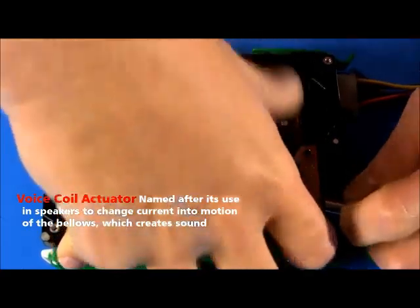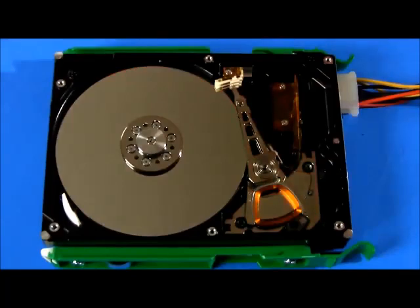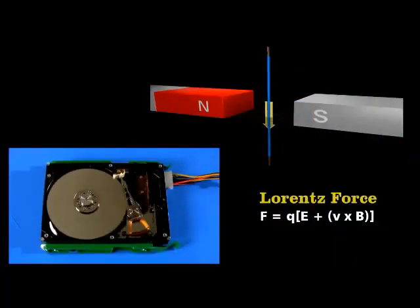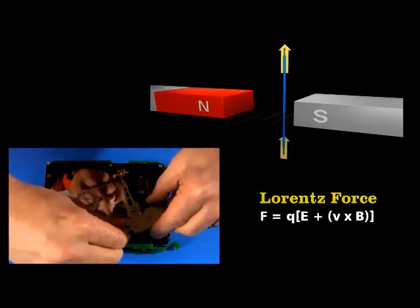The base of the arm sits between two powerful magnets. They're so strong, they're actually kind of hard to pull apart. The arm moves because of a Lorentz force. Pass a current through a wire that's in a magnetic field, and the wire experiences a force. Reverse the current, and the force also reverses.